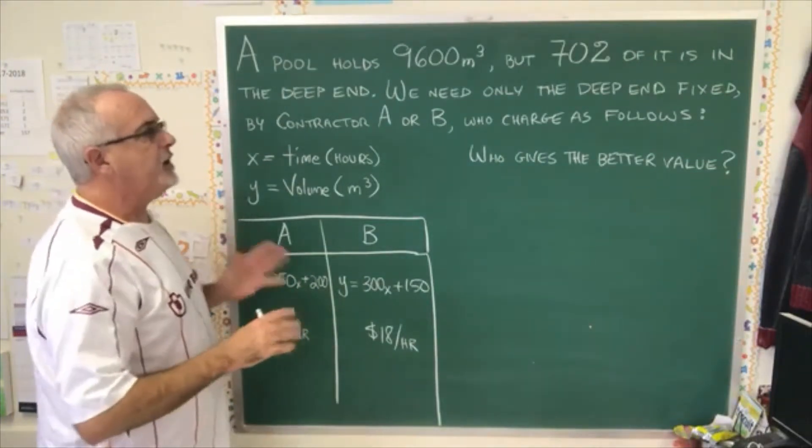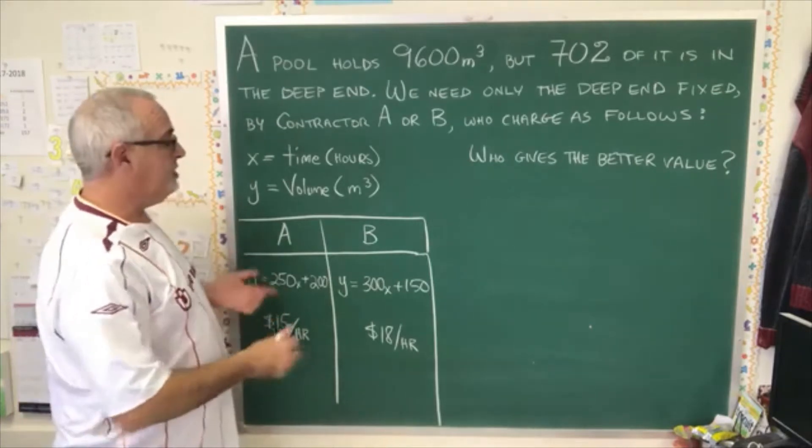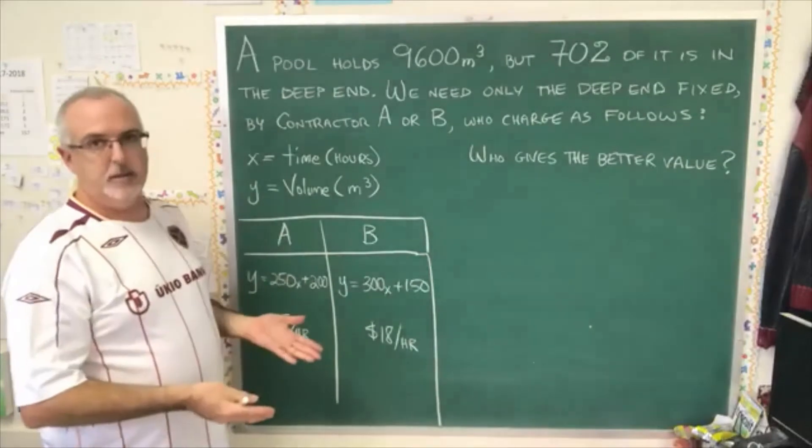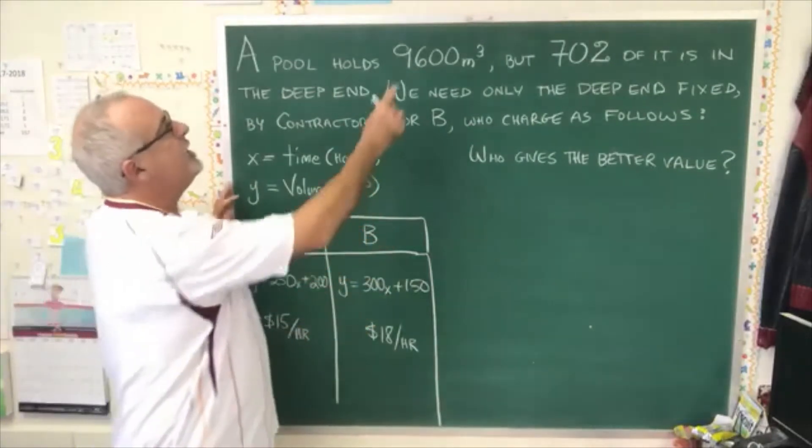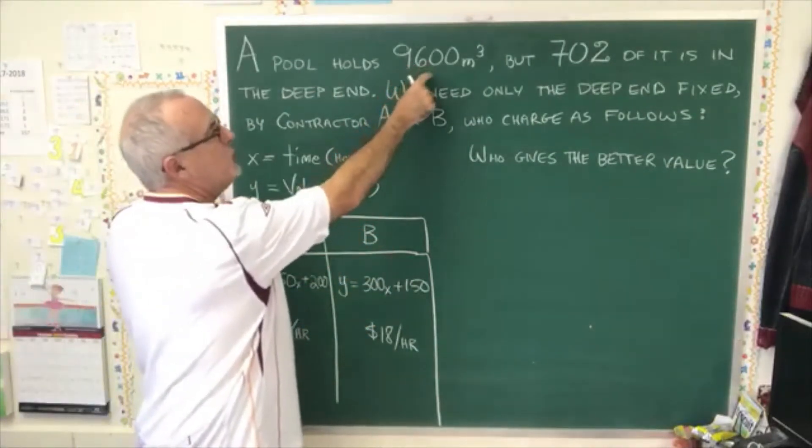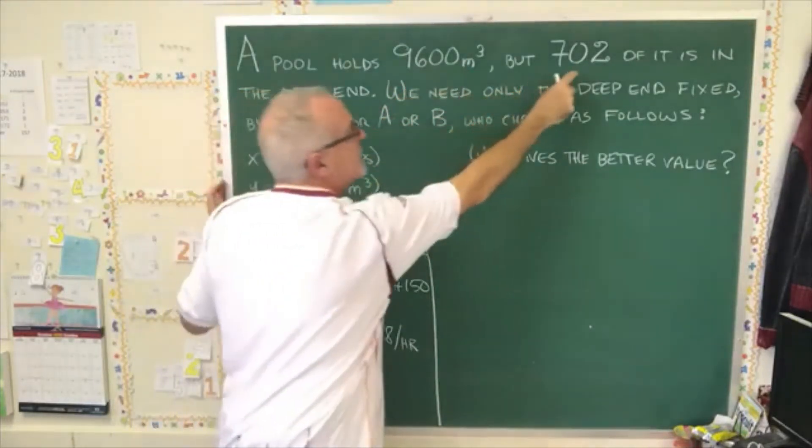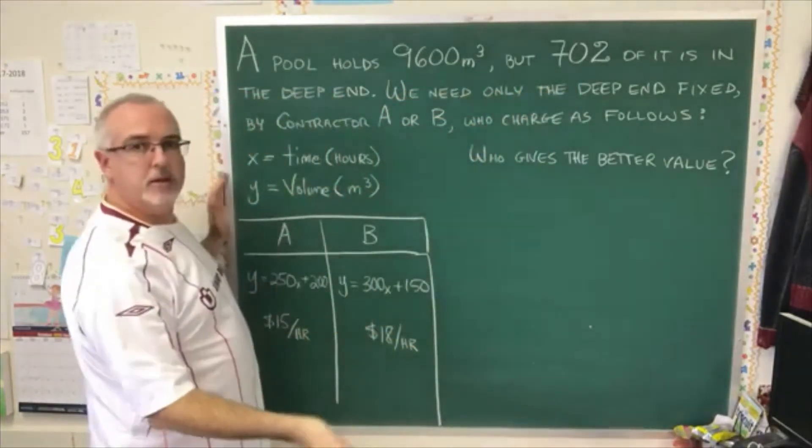But the question might be considered too easy if all you have to do is plug numbers into an equation to answer it, so there are some extra steps. The first extra step is we can see the volume of the pool, but we're not getting the work done on the entire volume of the pool, only on 70% of that volume. So we do an extra step right at the beginning.